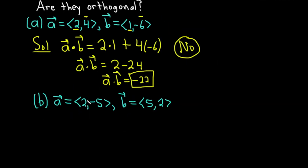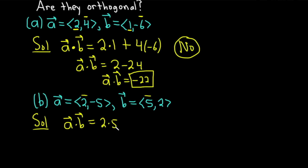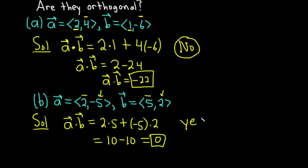Part B: A equals the vector with components 2, negative 5, and B is the vector with components 5, 2. We want the dot product. Just like before, A dot B equals 2 times 5 plus negative 5 times 2. This gives us 10 minus 10, so we get 0 this time. The vectors are orthogonal.